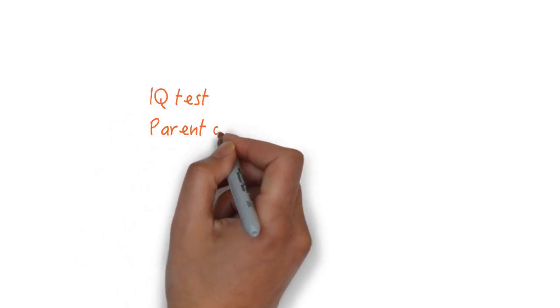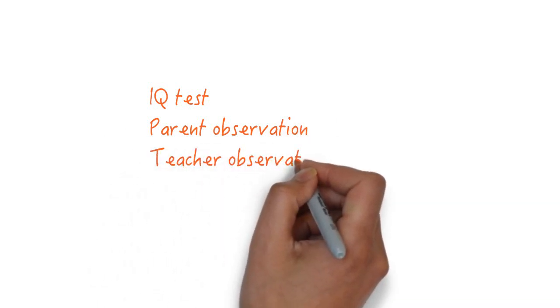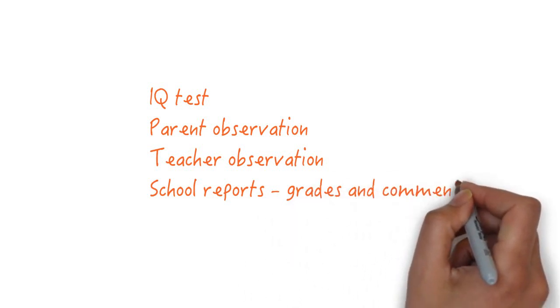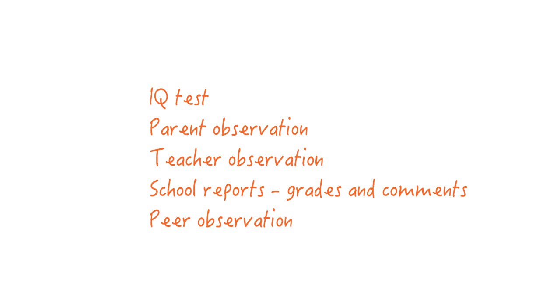In summary, any assessment of whether a child is gifted should take account of several sources of data and shouldn't rely on one measure. IQ tests are important, but so too are parent and teacher observation. In the next video, we will look at characteristics of gifted children to get a better understanding of them.